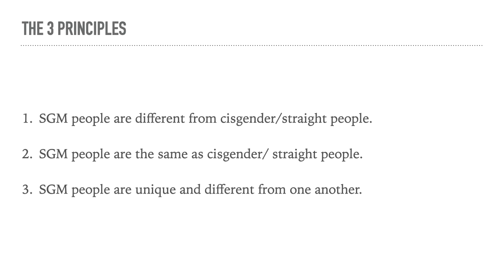Principle number 3: SGM people are unique and different from one another. What one bisexual cisgender woman wants for support around sexual dysfunction may be very different from what another bisexual cisgender woman wants. Just because one transgender man wants a hysterectomy and bilateral salpingo-oophorectomy as part of his gender affirmation does not mean that all transgender men desire the same surgery, as has been shown by a United States transgender survey of over 27,000 participants. Being SGM is one aspect of people's lives. Many other aspects such as race, ethnicity, education, class, geography, native and preferred languages, partnership, religion, family structure and employment are also critical to consider as they interact with care decisions, resources and needed services.